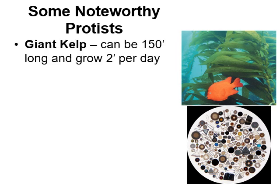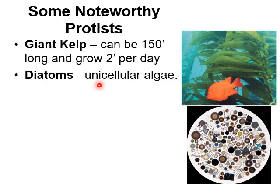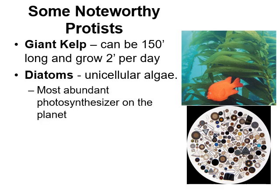Some noteworthy protists: Giant kelp can be found in our waters here in Southern California — the biggest protists, growing up to 150 feet long and as much as two feet per day, making them some of the fastest growing things on the planet. Diatoms are single-celled algae and the most abundant photosynthesizing organism on the planet, living mainly in the oceans. Roughly half of the oxygen in our atmosphere comes from these single-celled diatom algae — not tropical rainforests as many think.